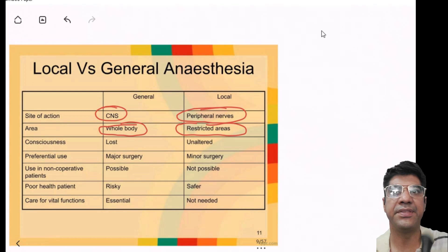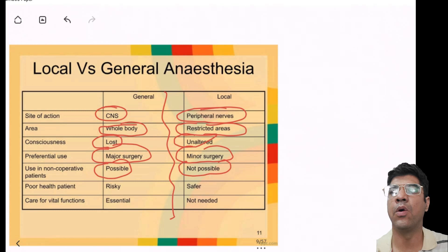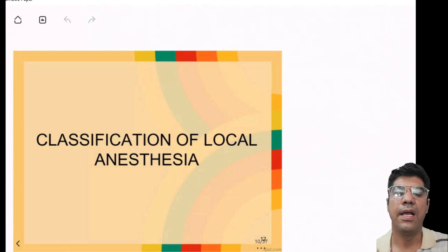In general anesthesia, consciousness is lost, whereas with local anesthesia the consciousness is unaltered. Local anesthesia is a minor procedure whereas general anesthesia is a major procedure. In a non-cooperative patient, local anesthesia is not possible whereas general anesthesia can be given.